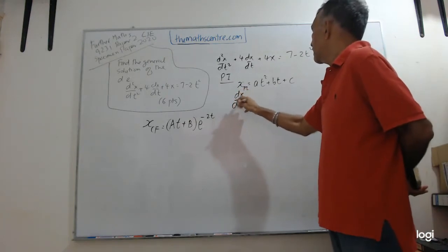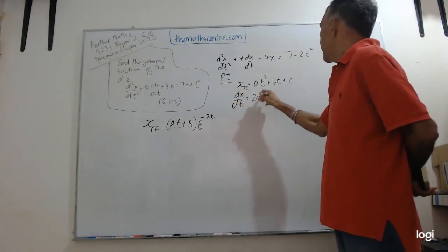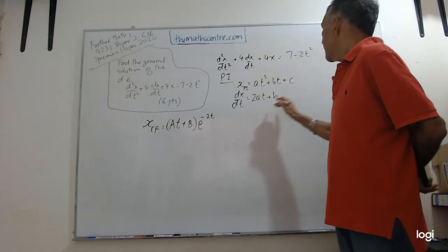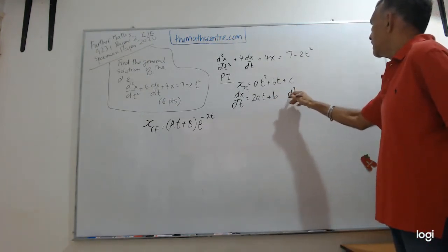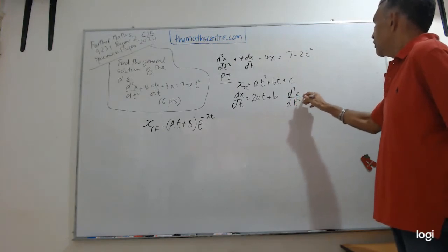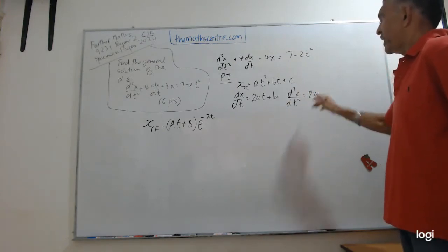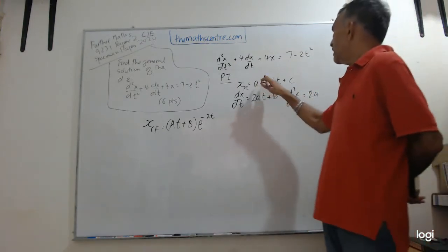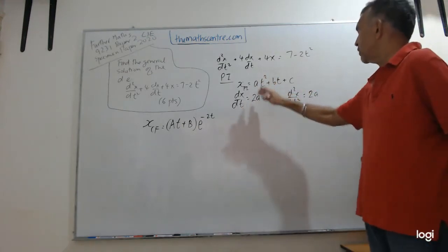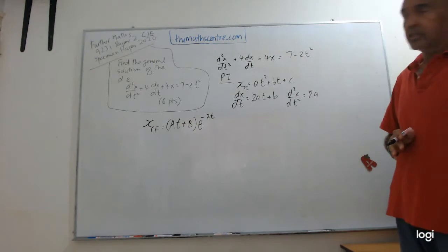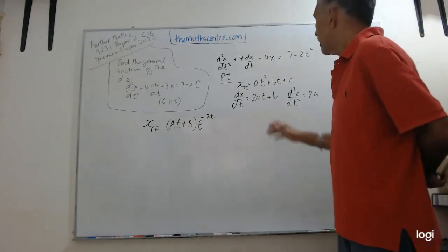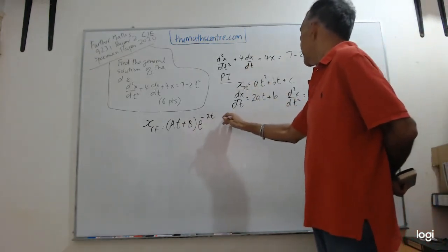From here we know dx/dt = 2at + b, and d²x/dt² will be 2a. Quickly check: at² + bt + c, dx/dt is 2at + b, and d²x/dt² will be just 2a.